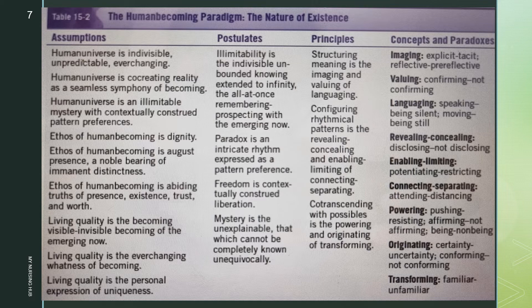Humans make choices about how they will be with paradoxical experiences and continuously make choices about where to focus their attention. For example, all humans live paradoxical rhythms of certainty-uncertainty and joy-sorrow. They move with the rhythm of their paradoxical experiences, at times focusing on certainty or joy, yet always having an awareness of living the uncertainty or sorrow inherent in situations.